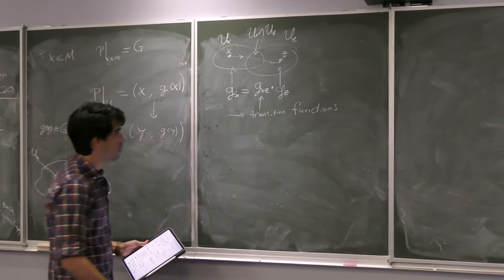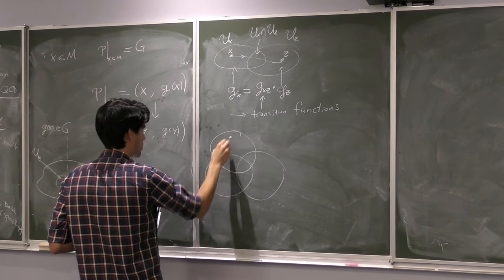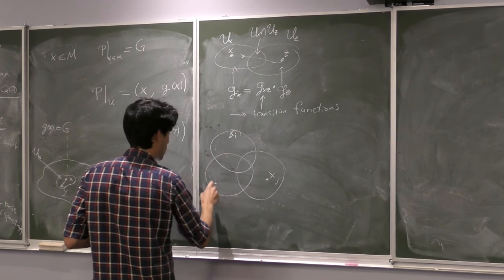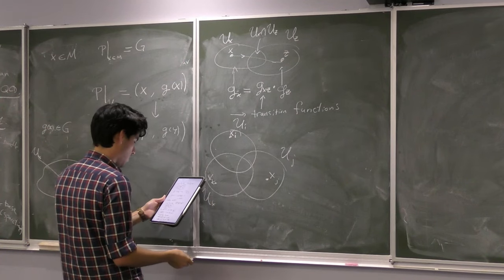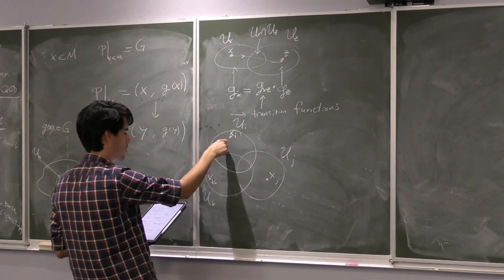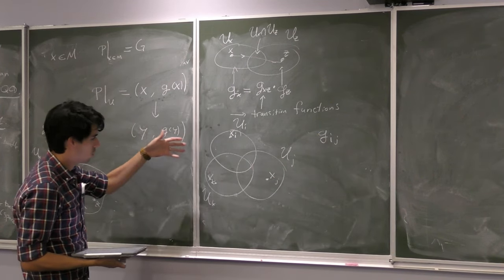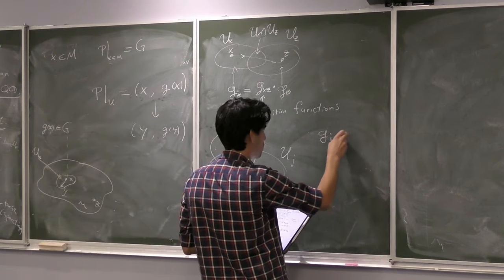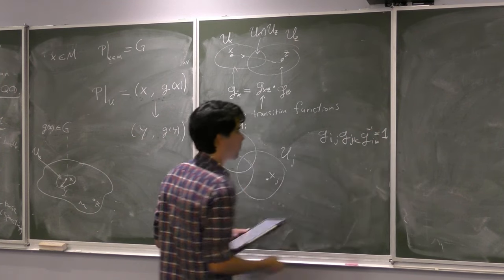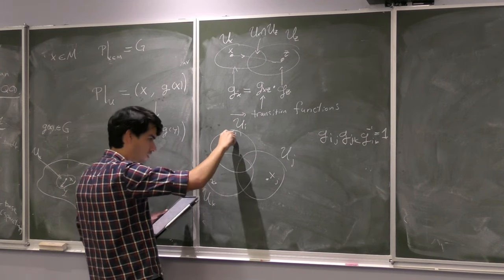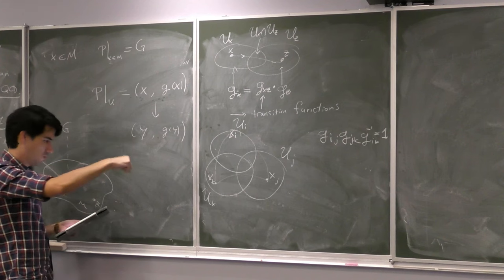These transition functions are constrained to be consistent. If you have three neighborhoods with points x_i, x_j, x_k, and neighborhoods U_i, U_j, U_k, then going from each neighborhood to the other you have transition functions g_{ij}, g_{jk}, and g_{ki}. The consistency condition is that g_{ij} times g_{jk} times g_{ik}^{-1} equals the identity. This means that if you pick a point x_i, go to x_j, go to x_k, and come back, you've done nothing — you come back to the same place.